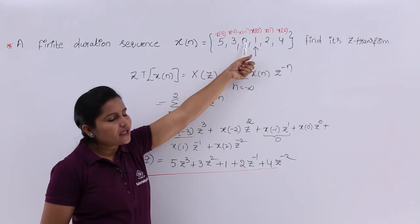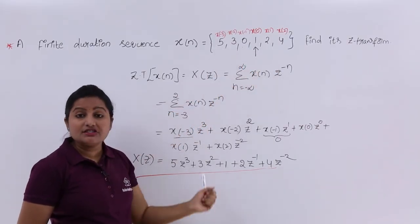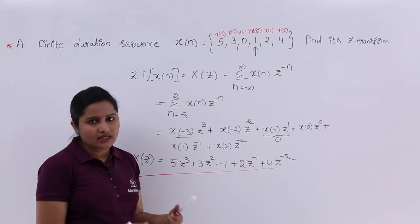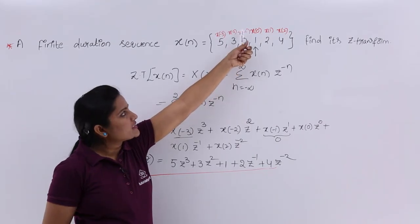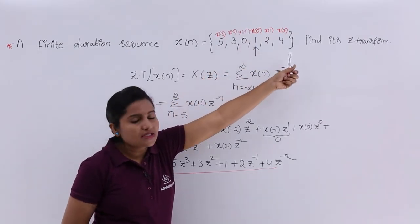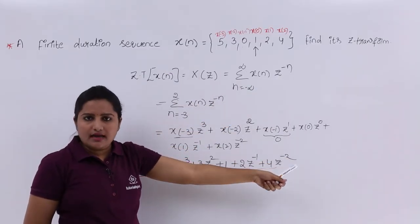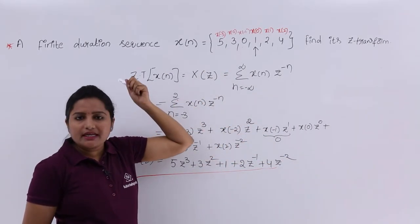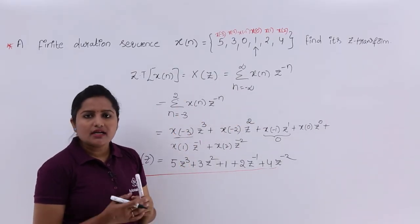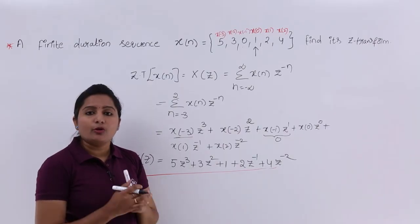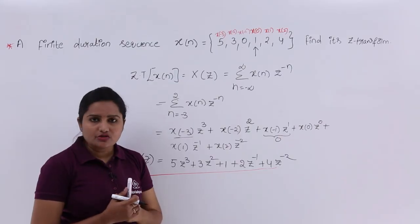For the same sequence, if you move the arrow mark to a different position, the Z-transform will change — you can check this later. If you place the arrow mark at a different point and treat that value as X of 0, the remaining samples to the right become positive samples and to the left become negative samples. You would get a different number of positive and negative samples, and the entire problem changes according to the arrow mark position.